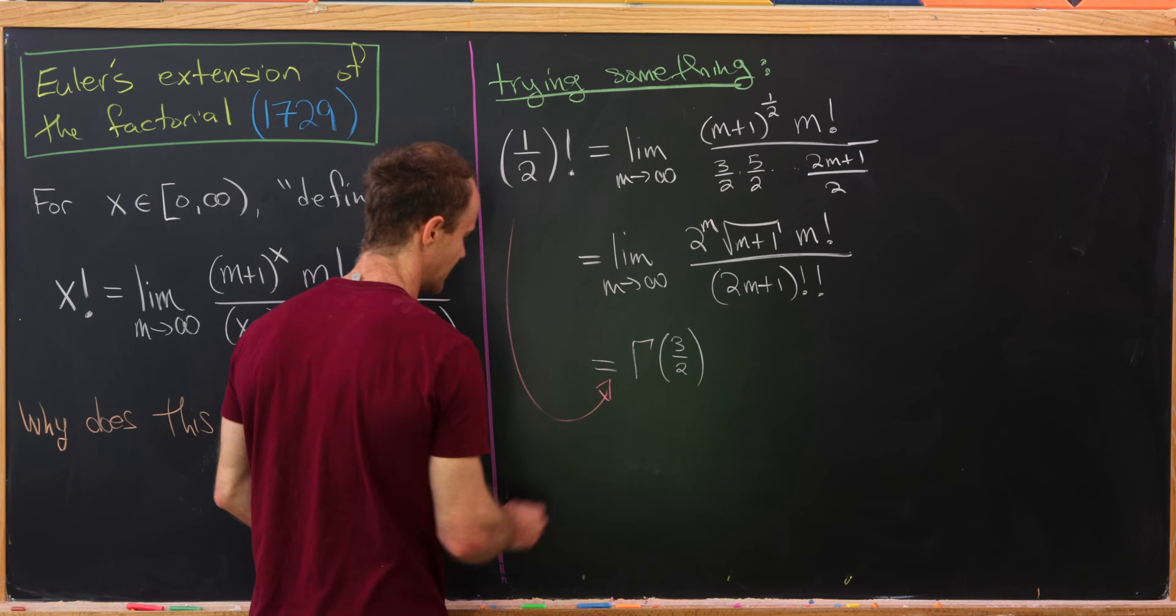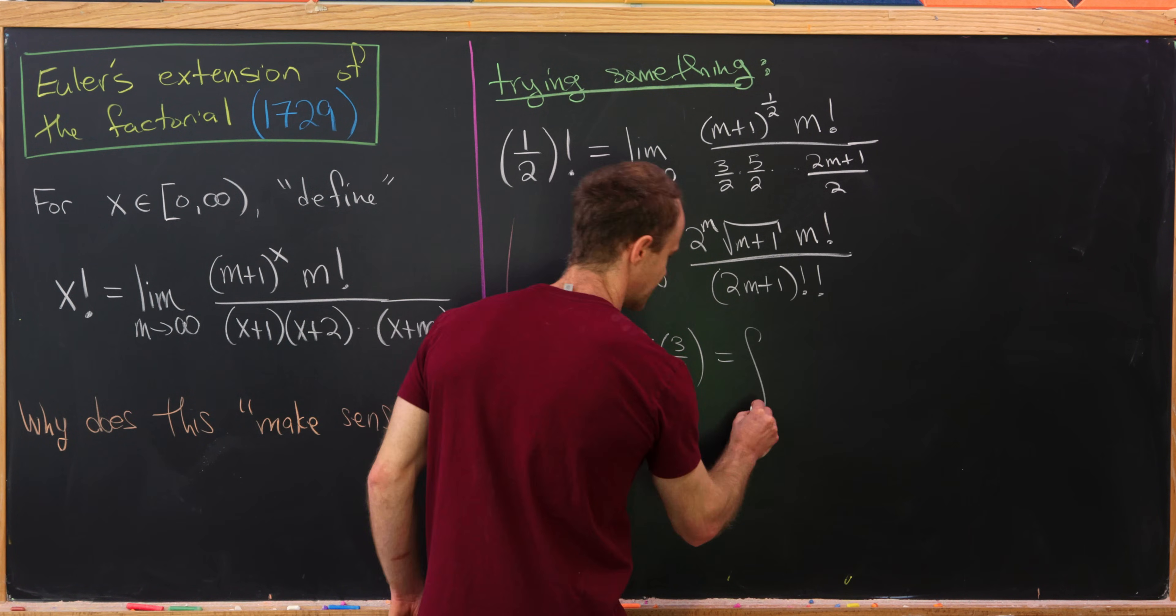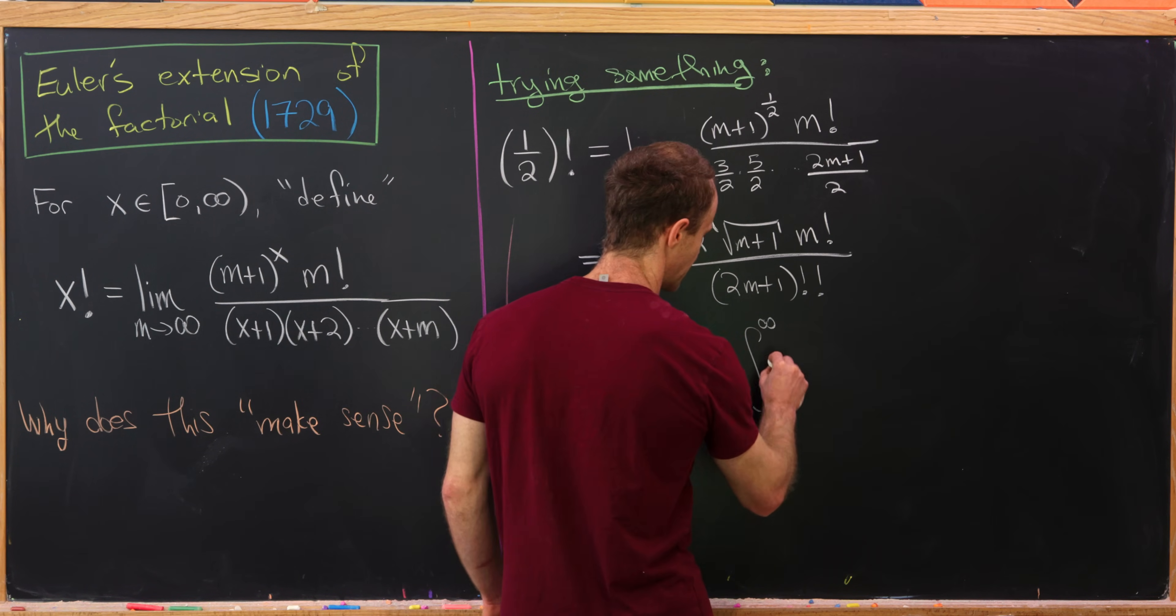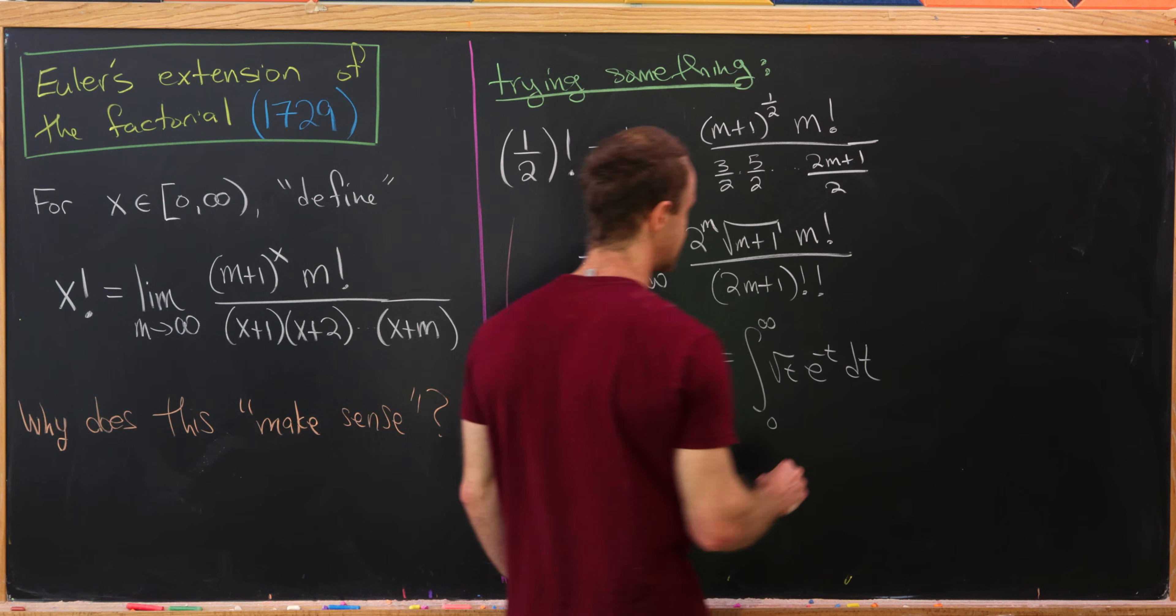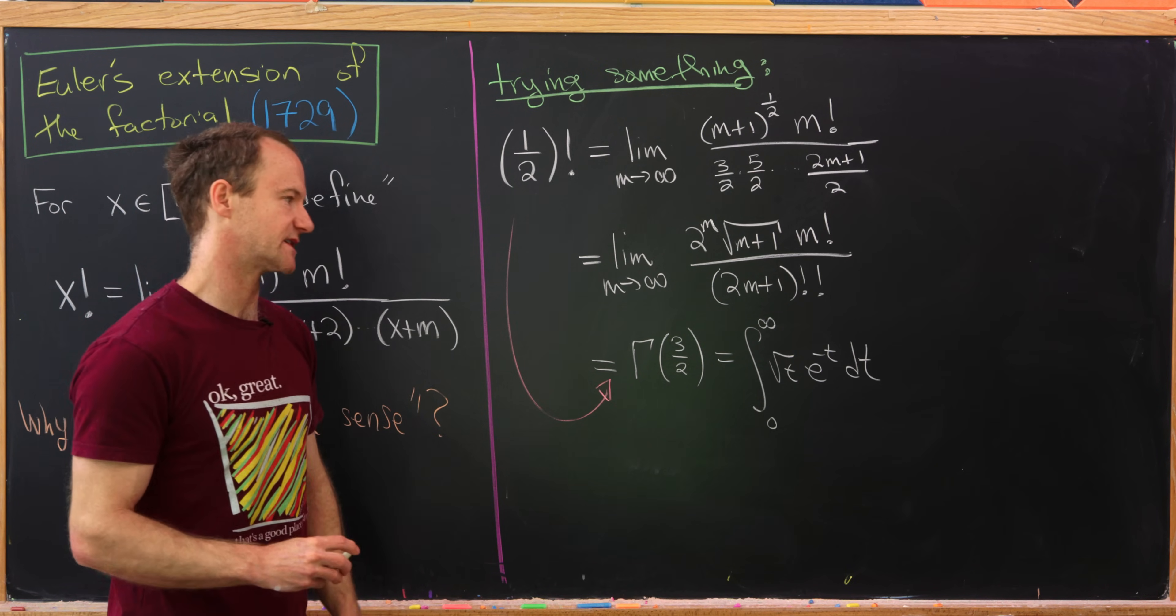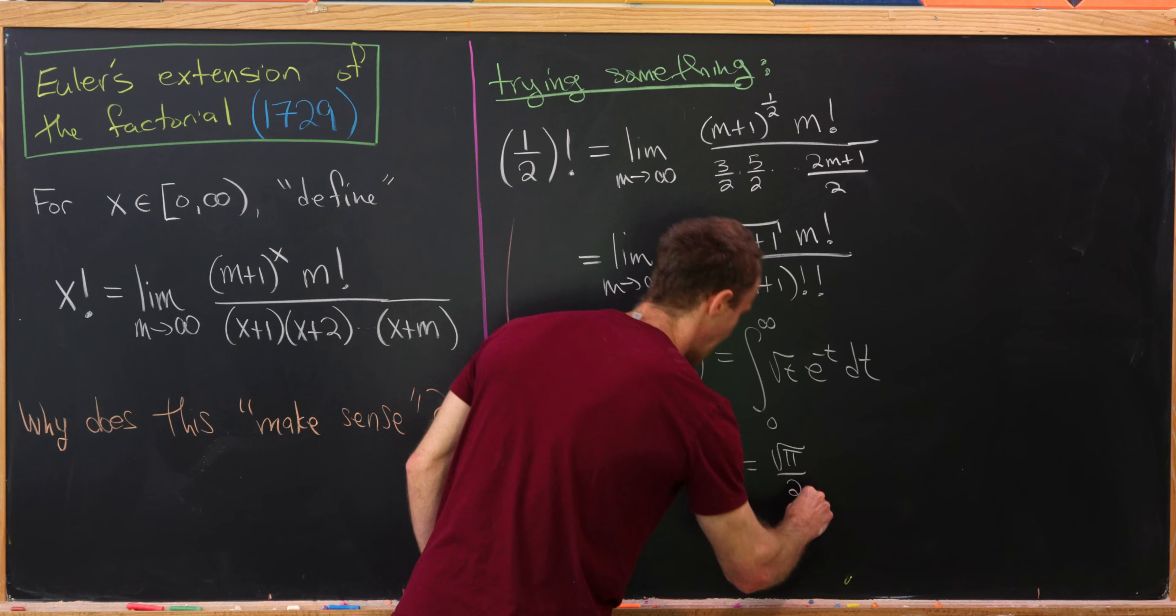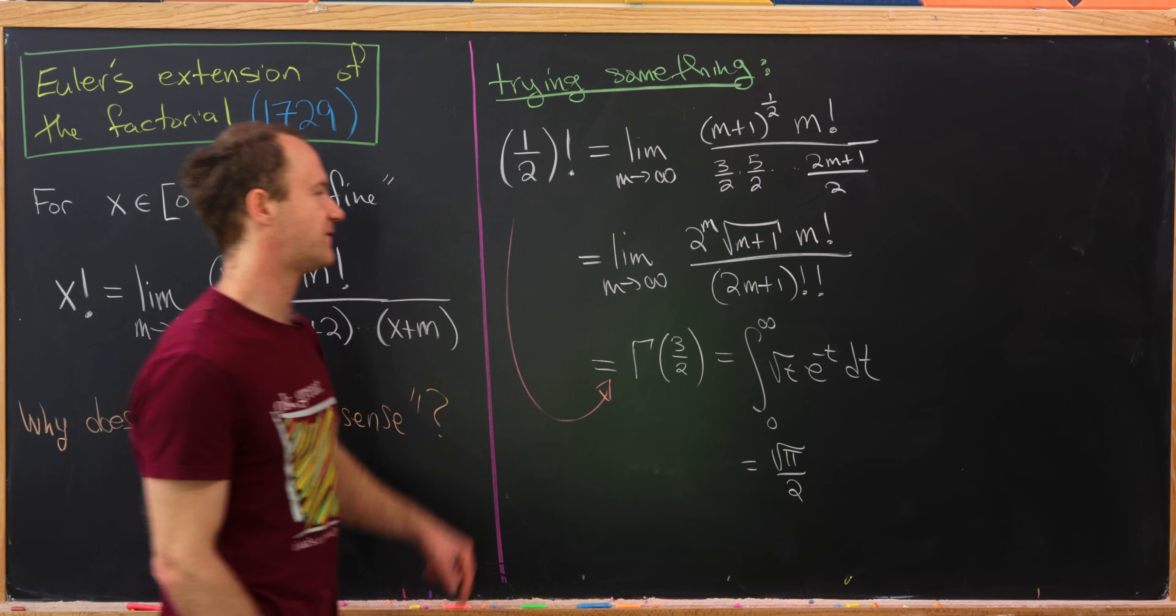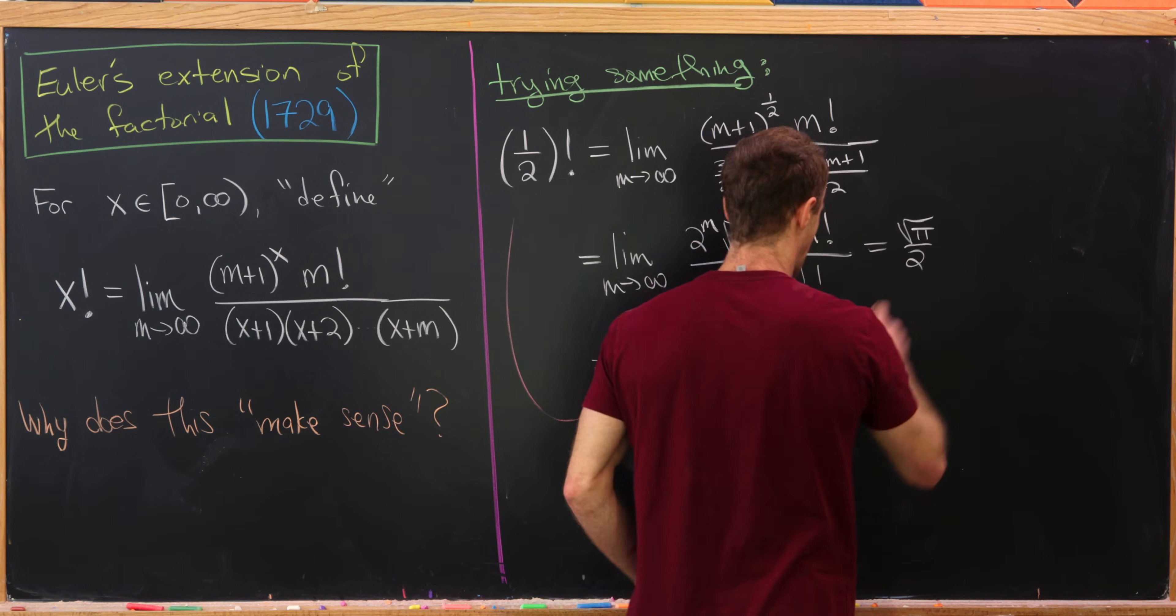That being said, we can use the fact that this is the gamma function evaluated at 3/2. Kind of via this, again, integral representation of the gamma function. Which is the integral from zero to infinity of this will end up being sqrt(t) times e^(-t) dt. And that integral is actually not so hard to calculate. And it can be calculated to be sqrt(pi)/2.